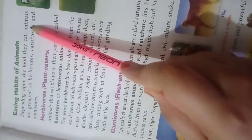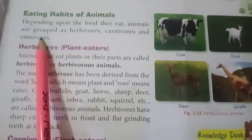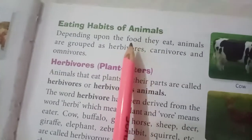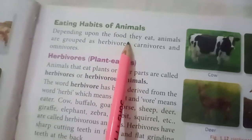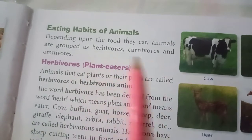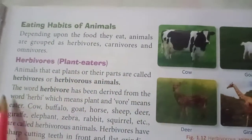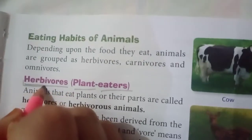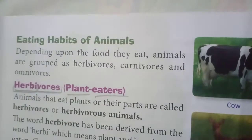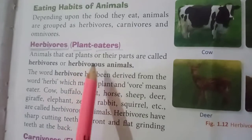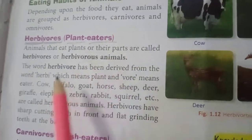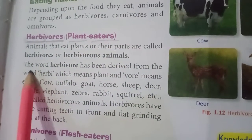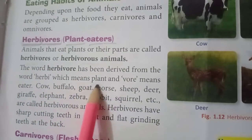Depending upon the food they eat, animals are grouped into three categories: herbivores, carnivores, and omnivores. Herbivores are plant eaters. The word herbivore is derived from 'herba' which means plant and 'vore' which means eater. Animals that eat plants and their parts are called herbivores.